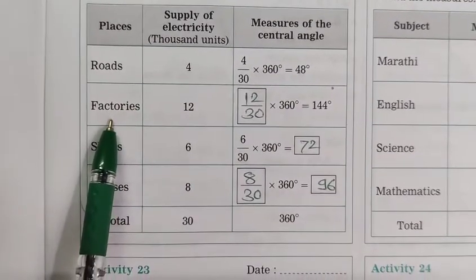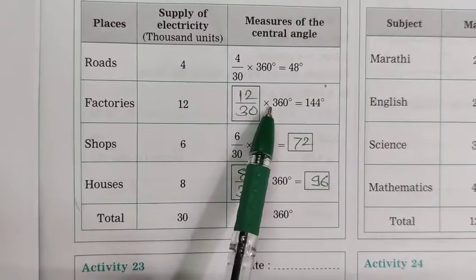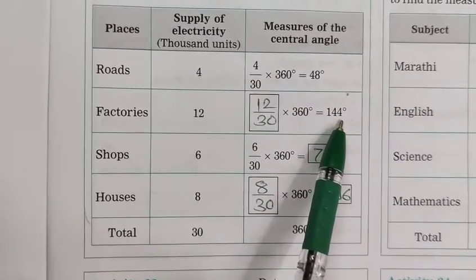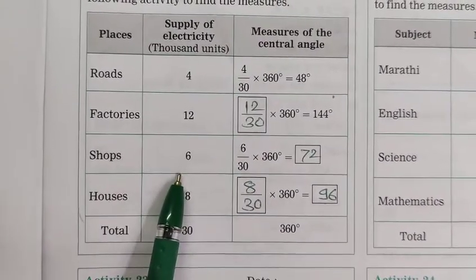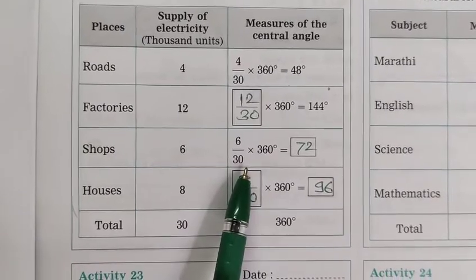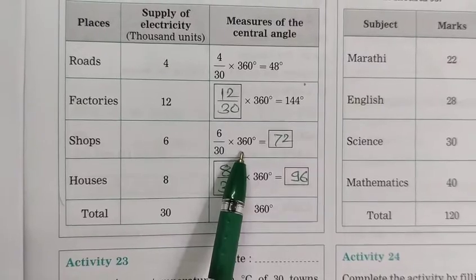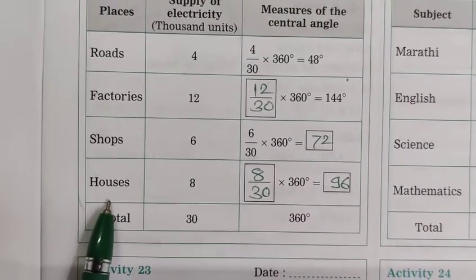Now in second, factories: 12. 12 by 30 into 360 equal to 144. Now shops, supply of electricity 6. Here measures of the central angle: 6 by 30 into 360 equal to 72.